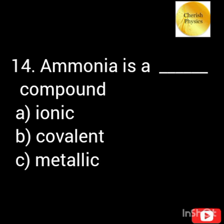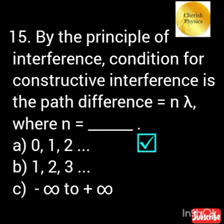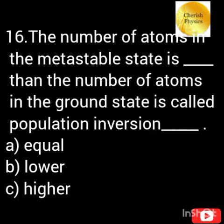Ammonia is of what compound? In the condition of constructive interference, the path difference is equal to n lambda, where n is? In population inversion, how is the number of atoms in the excited state compared to the ground state?